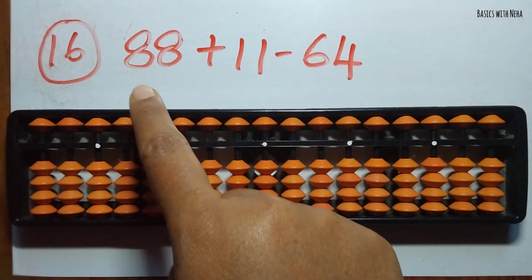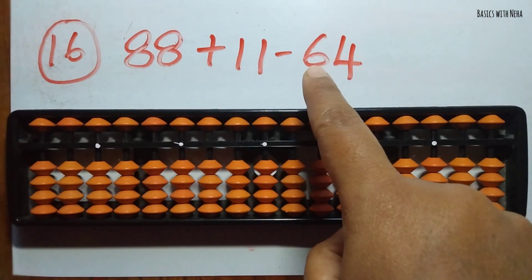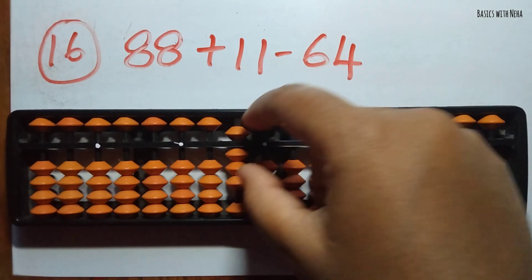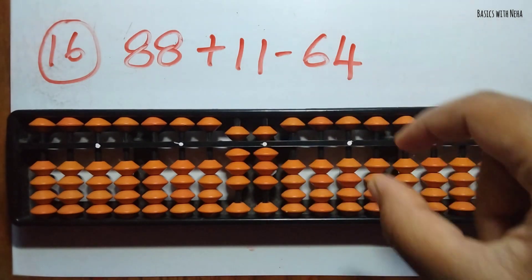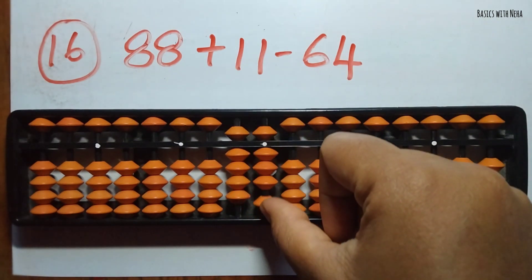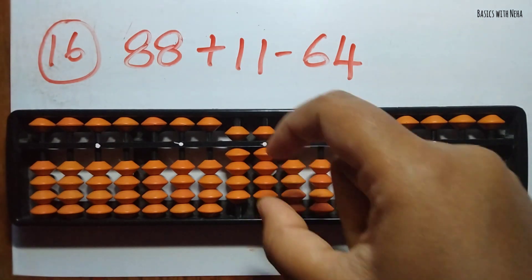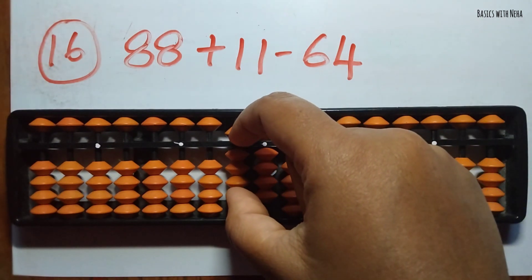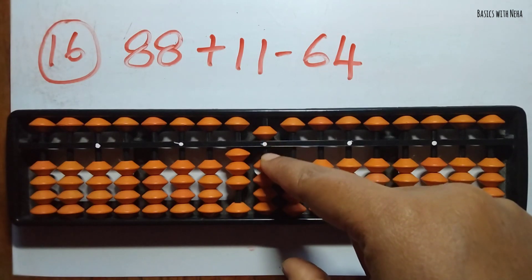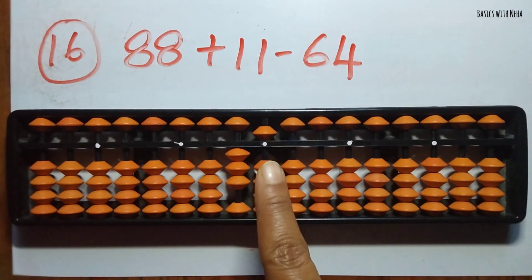The sixteenth sum: 88 plus 11 minus 64. First take 88. Now we should add 11 — 1 and 1 can be added directly. Then you should minus 64 — minus 6 can be done in the 10's rod and minus 4 in the 1's rod. The answer is 35.